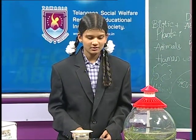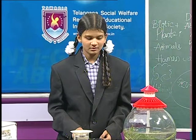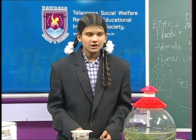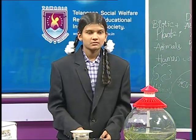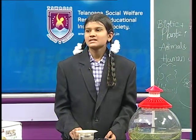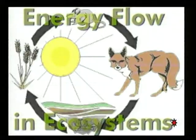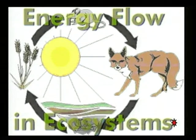From where do plants get their food? From the sun. This is called energy flow in an ecosystem.